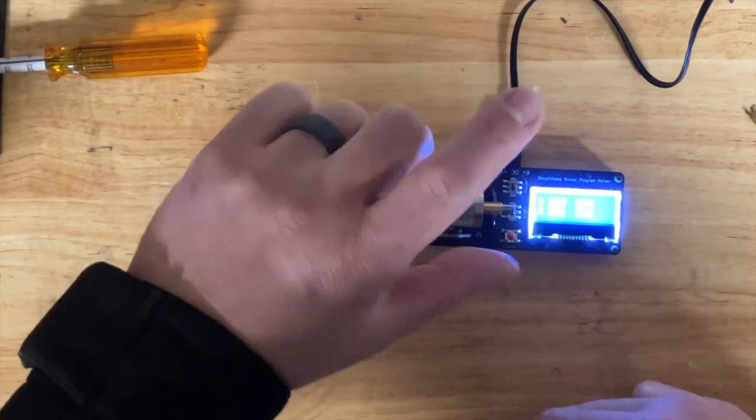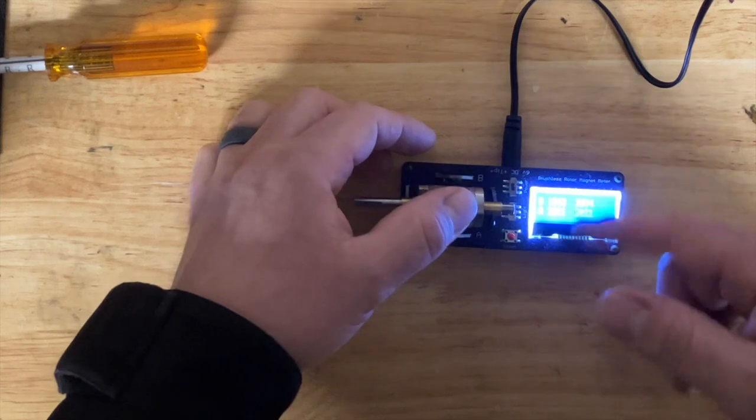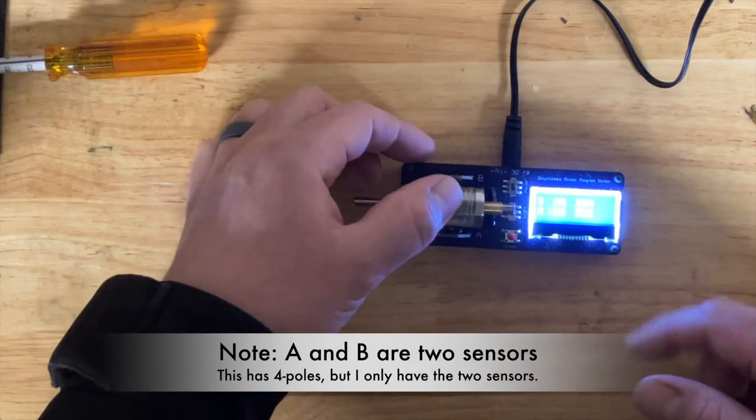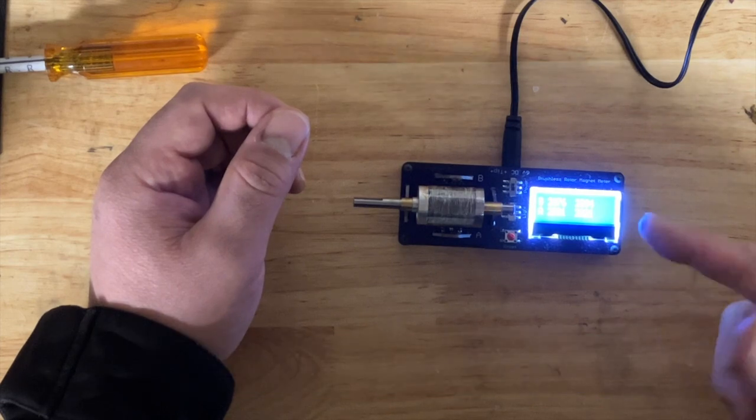Every time I turn it, it switches from north and south, so your A and B are going to change because of that reason. But I'm just looking at the max numbers, and we're looking at 2094, 2021.